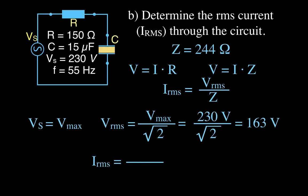Now we can calculate the RMS current. The RMS current is the RMS voltage divided by the impedance — 163 divided by 244 — and we get that the RMS current is 0.67 amperes.